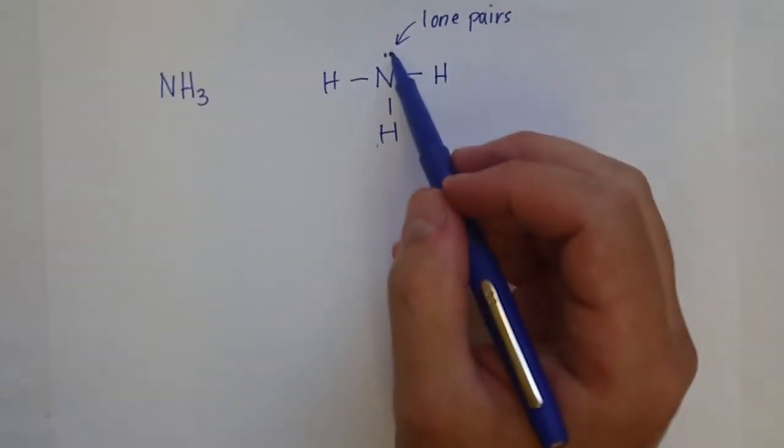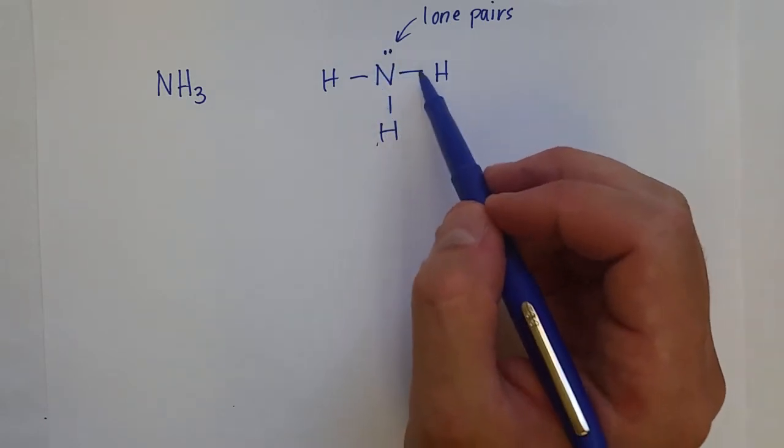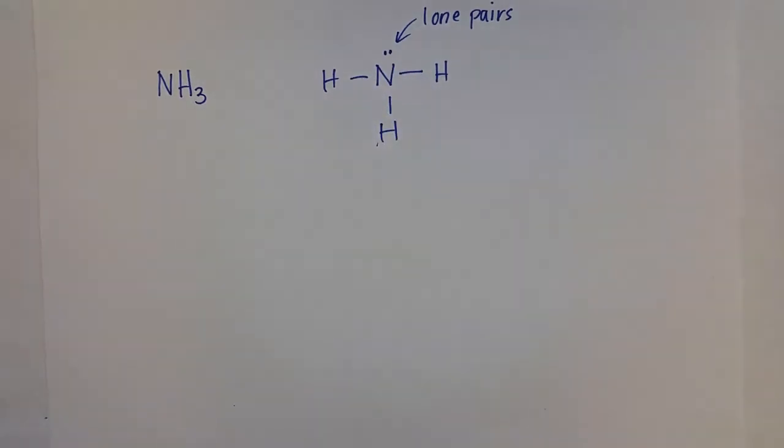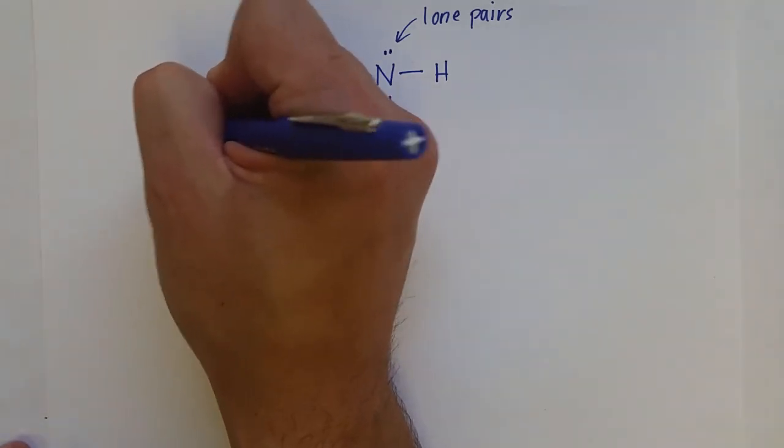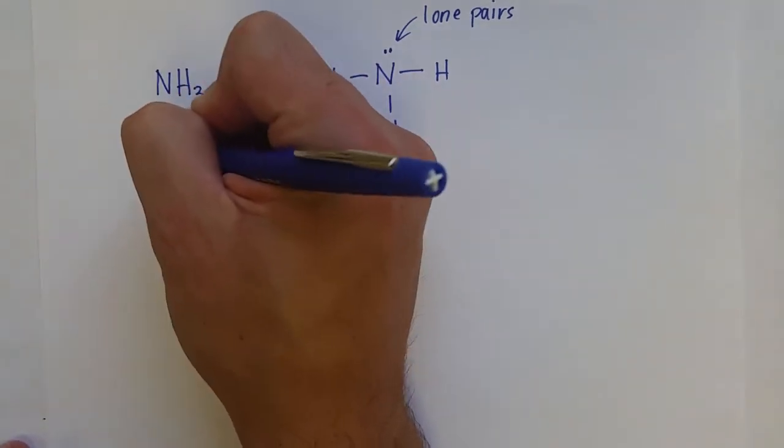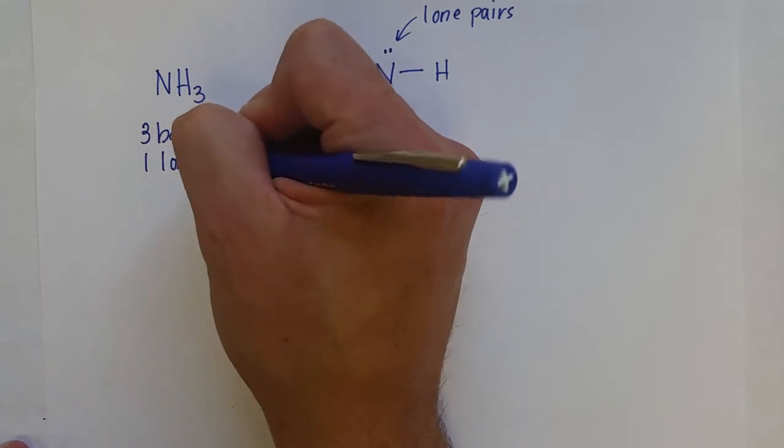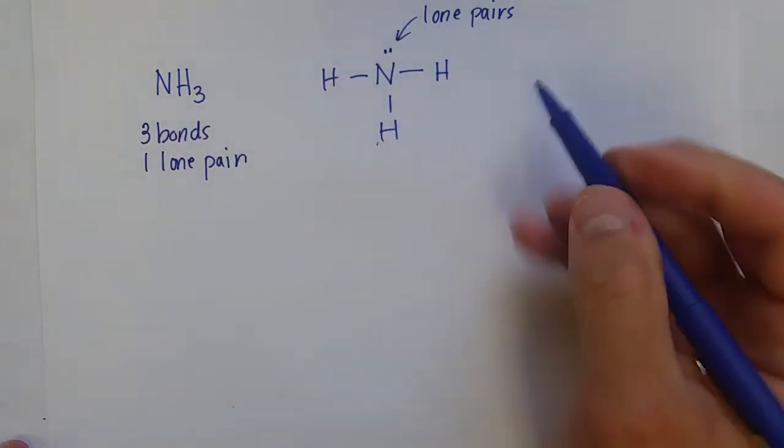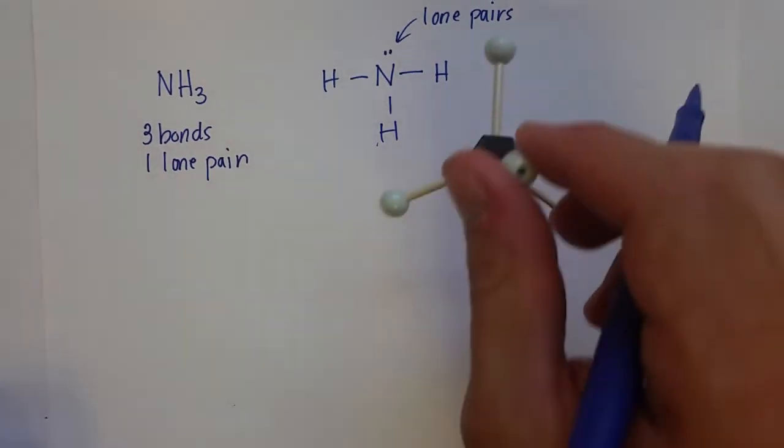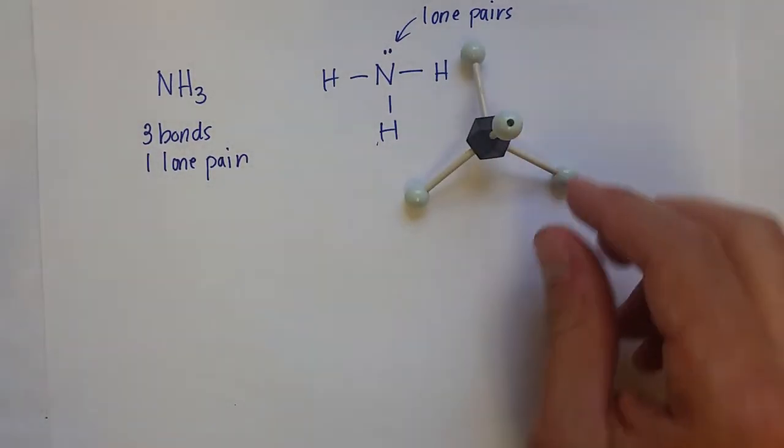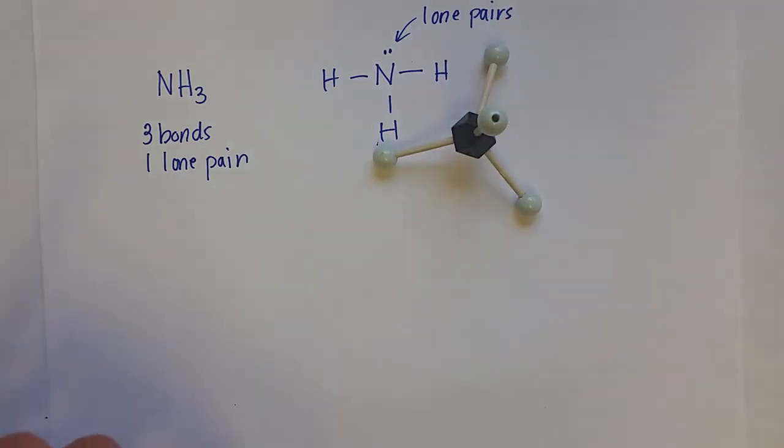And so, of course, nitrogen needs those, because that gives us eight valence electrons for the octet rule. But that is also going to impact the geometry. Now, overall, with three bonds and one lone pair, the overall structure of all of these electron groups is going to be tetrahedral, just like methane was. But one of them is a lone pair.